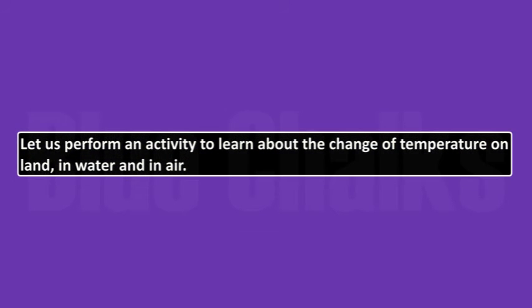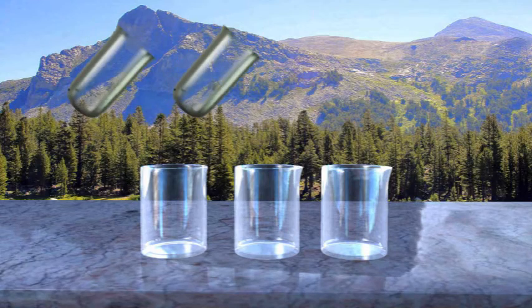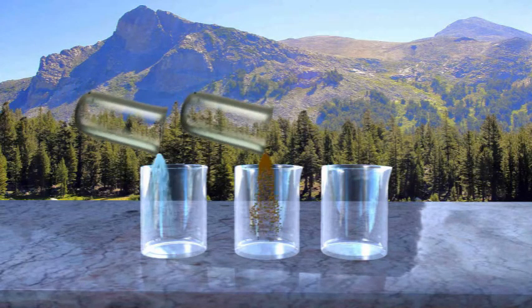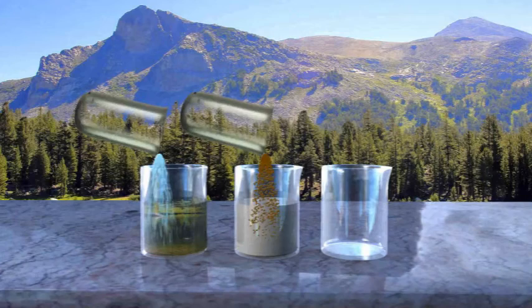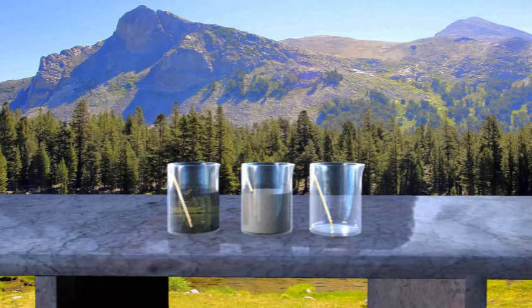Let us perform an activity to learn about the change of temperature in land, water, and air. Take three beakers. Fill the first beaker with water, the second with soil, and the third is left empty. Keep a thermometer in all three beakers. Keep them in bright sunlight for three hours and note the reading of the thermometer in all the beakers.